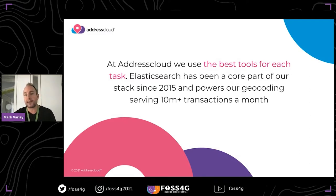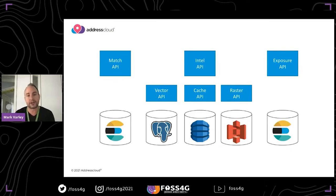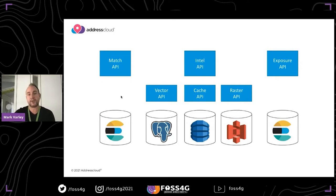Our stack serves around 10 million locations a month. We're big believers in having the right tool for the right job. As of last year, our stack is 100% serverless — my colleague Thomas Holderness did a talk on serverless geospatial and our findings after running it in production for 18 months. Each service is backed by the most appropriate technology: for geocoding we use Elasticsearch, for our intelligence API we use a mix of PostGIS, DynamoDB, and S3 with cloud-optimized GeoTIFFs for rasters.